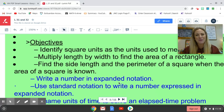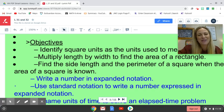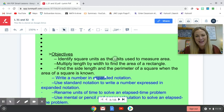Our learning targets for today are probably a repeat of what I just said, but just for technicality, let's read through them really quickly. Your learning targets are to identify square units as the units used to measure area, multiply length times width to find the area of a rectangle, find the side length and perimeter of a square when the area of a square is known.